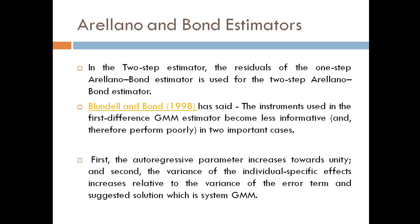Blundell and Bond (1998) stated that the instruments used in the first difference GMM estimator become less informative and therefore perform poorly in two important cases: first, when the autoregressive parameter increases towards unity; and second, when the variance of the individual specific effects increases relative to the variance of the error term. They suggested a solution, which is the system GMM.